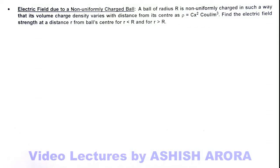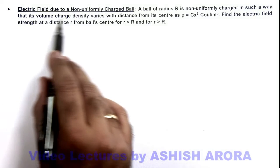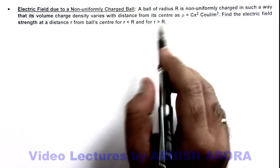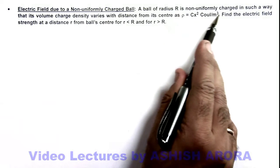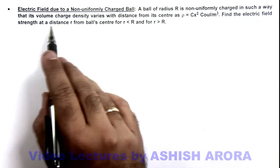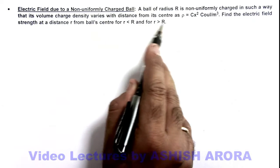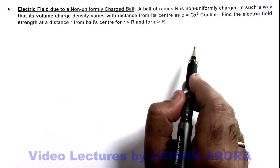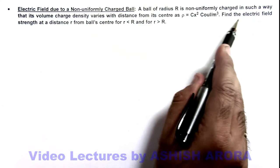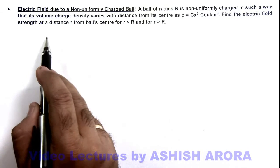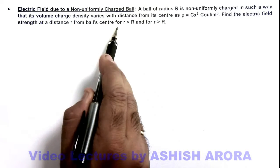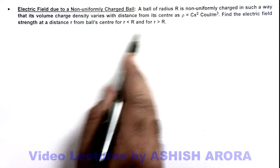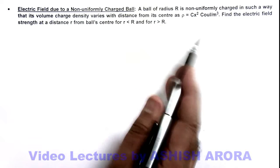In this illustration we'll study the electric field due to a non-uniformly charged ball. A ball of radius R is non-uniformly charged such that its volume charge density varies with distance from the center as cx² coulombs per meter cube. We are required to find the electric field strength at a distance r from the ball center for two cases: r less than R (interior point) and r greater than R (exterior point).